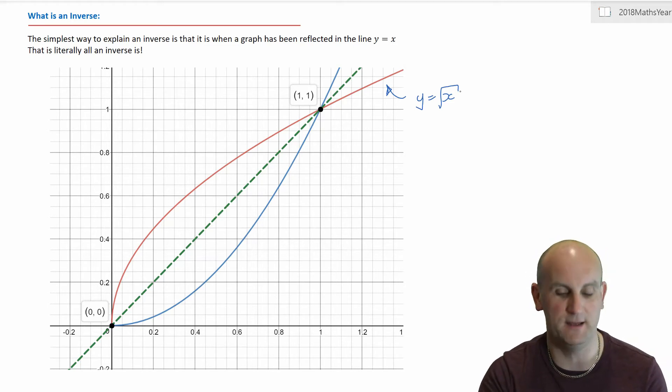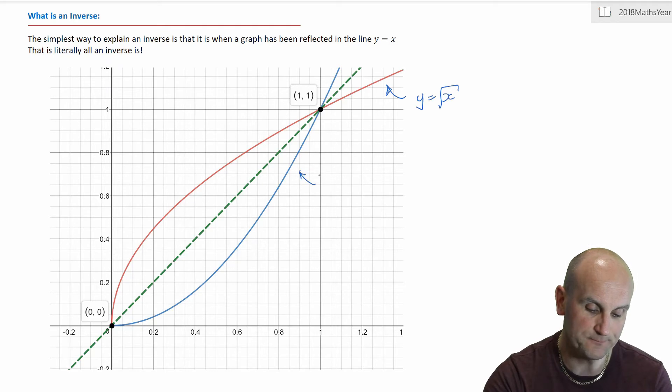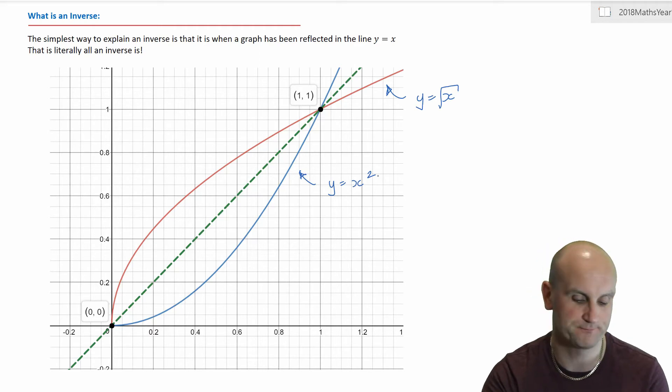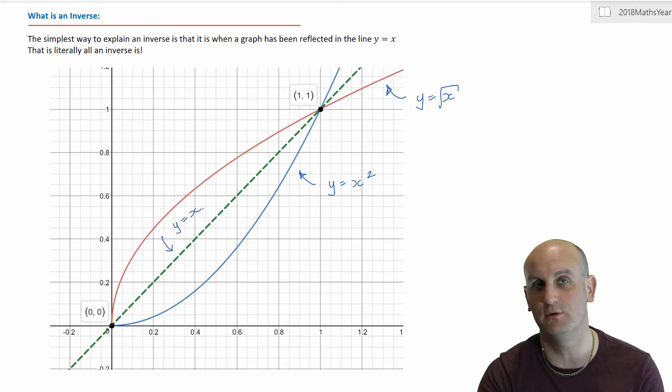This blue line here is part of the graph y equals x squared. Now, come back again as to why it's just part of, because actually that's the trick here between whether it's an inverse relationship or an inverse function. And as I say, this line here is the line y equals x. It is critically, critically important. What it means is every point along there has the same x and y coordinate: (1,1), (2,2), (3,3), (4,4), (5,5). It is a diagonal line.